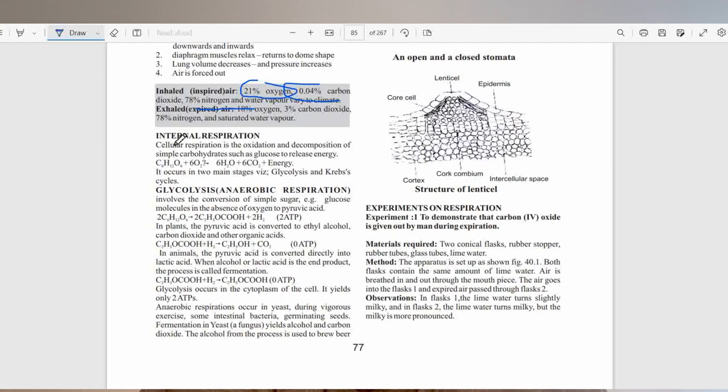This takes us to internal respiration, which deals with cellular respiration. It's divided into aerobic and anaerobic, or usually anaerobic first, then aerobic follows. Another name for anaerobic respiration is glycolysis, and that occurs in the absence of oxygen. Glucose is the substrate for this reaction. Glucose is broken down to liberate two molecules of ATP.